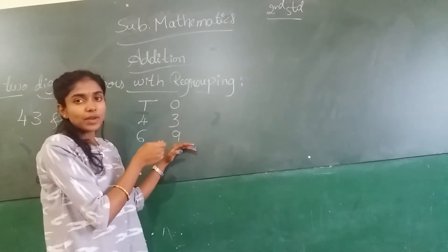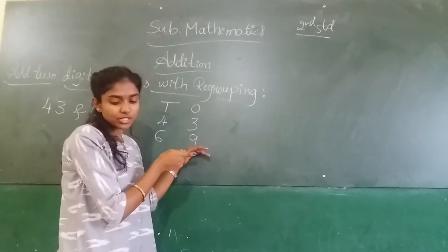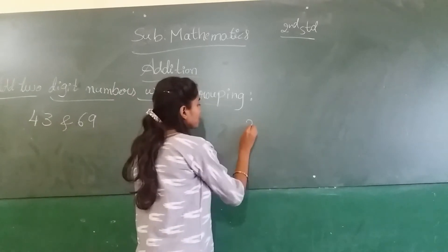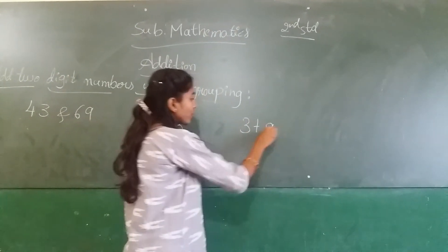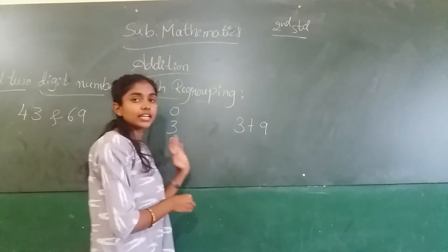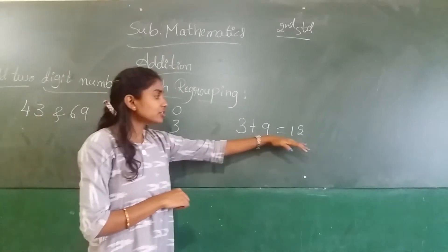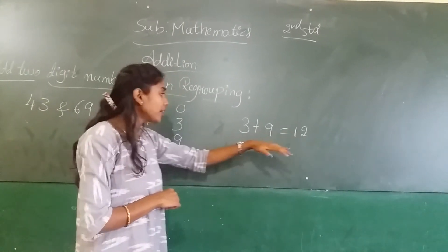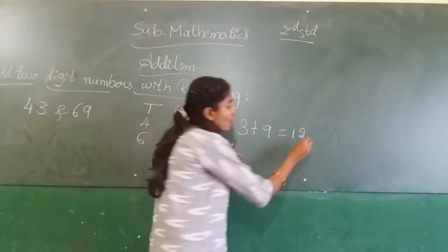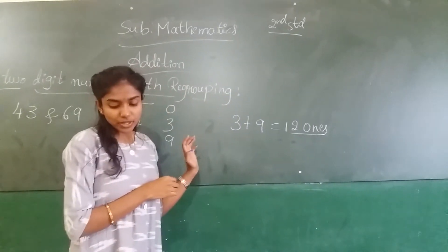This is the place value of regrouping. This is the number of regrouping. Next ones column, three plus nine. Three plus nine is in ones column. So, three plus nine equals to twelve. Twelve is the answer. Twelve ones.